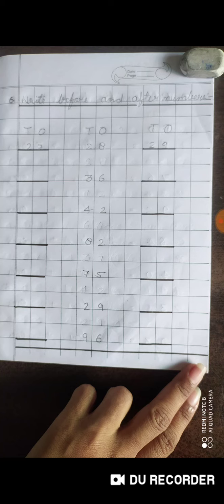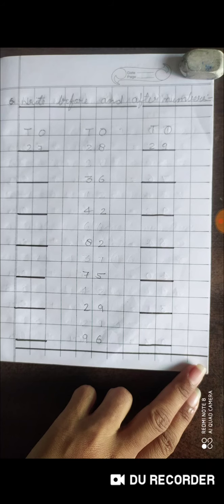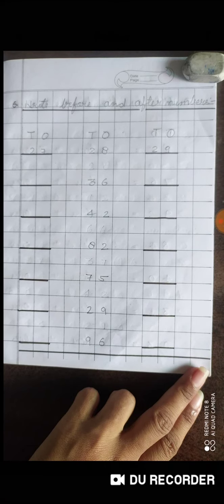36: 35 is before number and 37 is after number. 42: 41 is before number and 43 is after number. 82: 81 is before number and 83 is after number. 75: 74 is before number and 76 is after number. 29: 28 is before number and 30 is after number. 96: 95 is before number and 97 is after number.